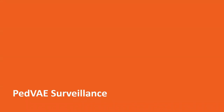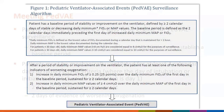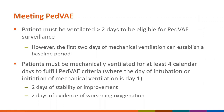Now let's discuss the application of the PVAE algorithm. The patient must be ventilated for greater than two days to be eligible for PVAE surveillance, and those first two days can establish the baseline period of stability or improvement. After two days of ventilation, you need two more days of worsening oxygenation. Therefore, the earliest a patient can meet the PVAE definition is after four days of mechanical ventilation.